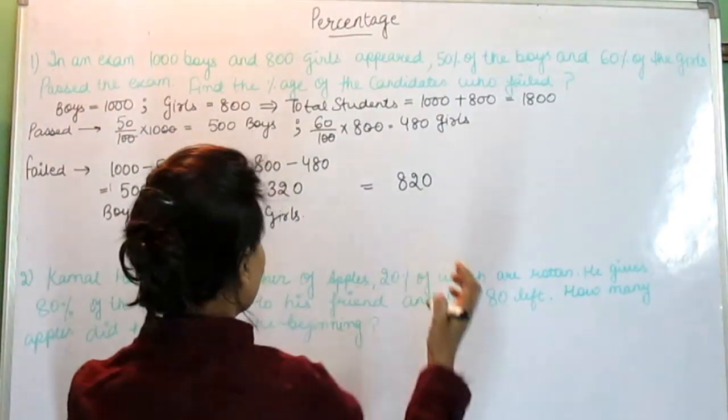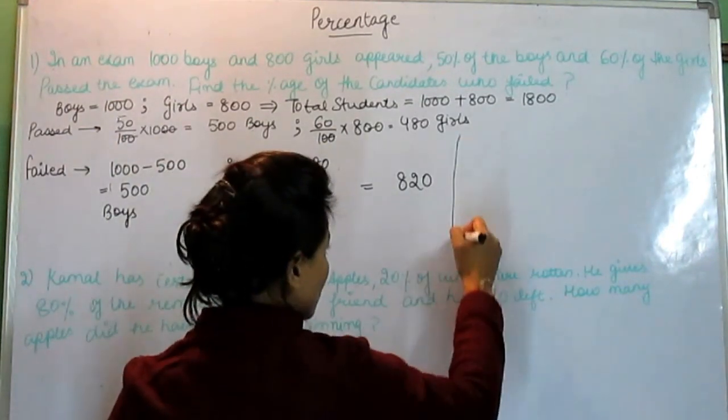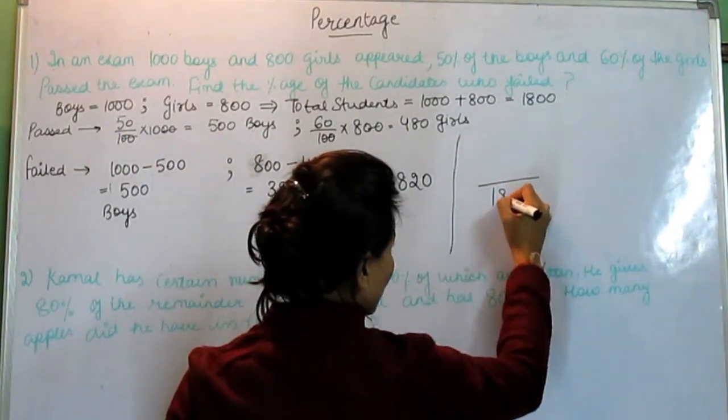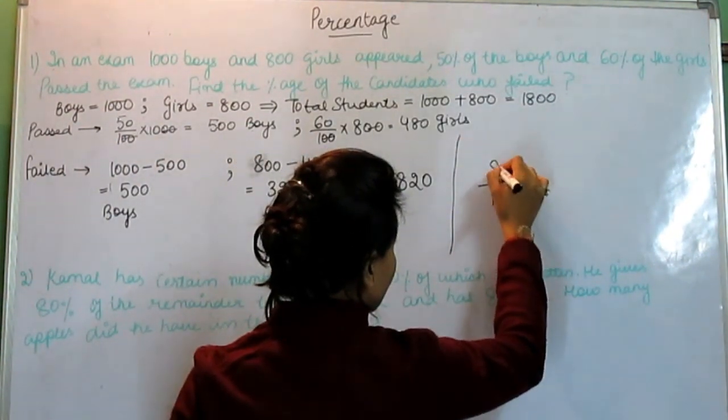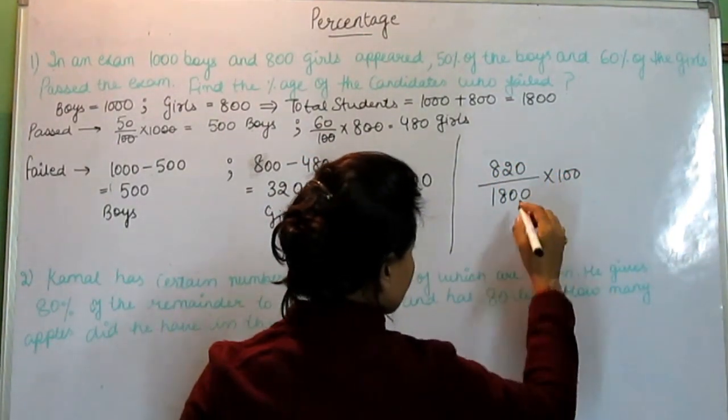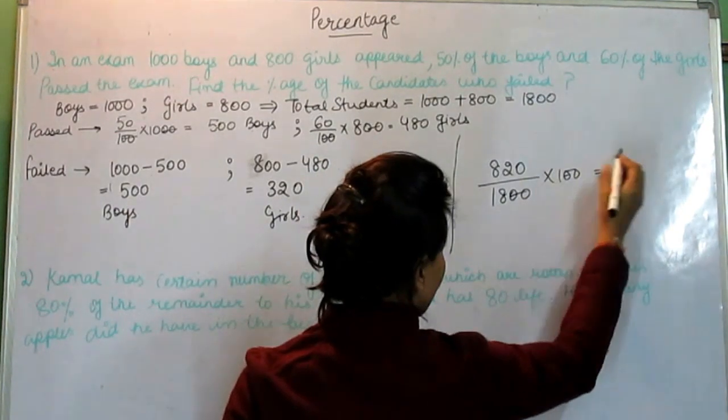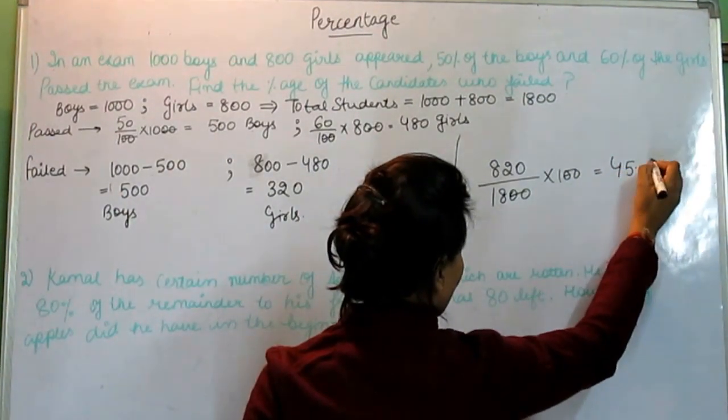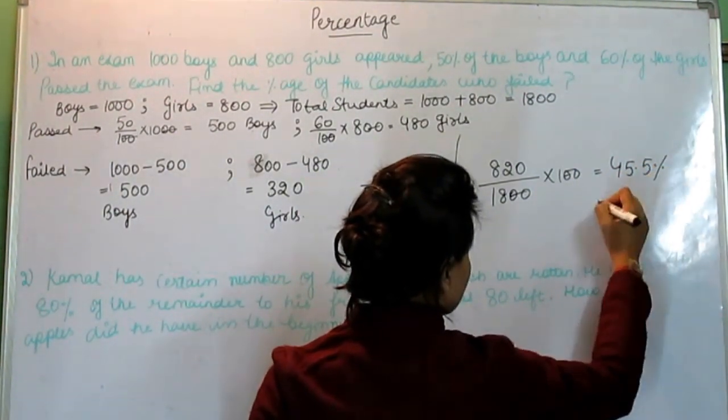We need to get the percentage. Out of 1800 total, 820 students failed. So what we have is 820 divided by 1800 times 100, which equals 45.5%. This is the answer.